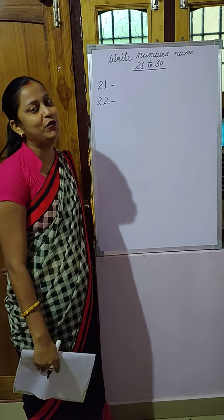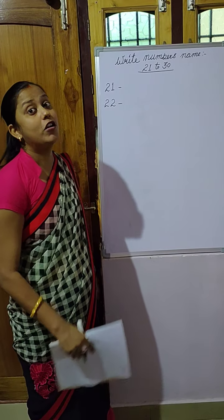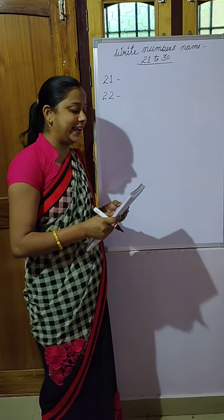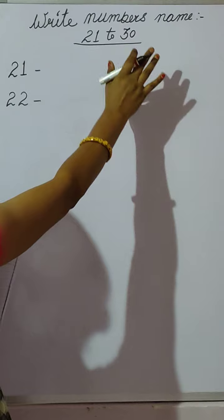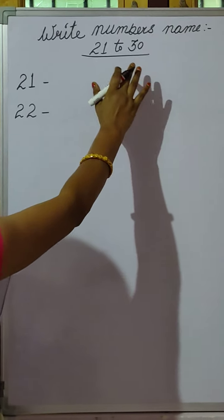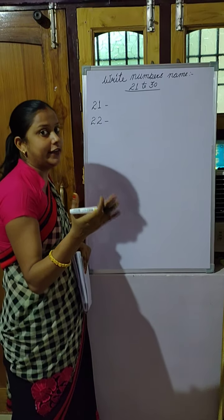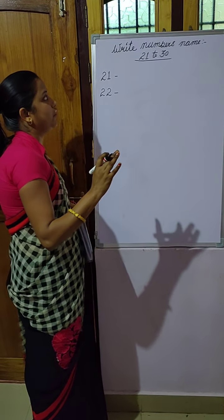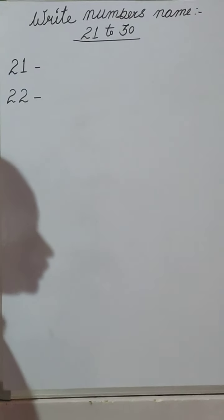Hello children, how are you all? I hope all are doing well and I hope all are doing their homeworks on time. Isn't it? Okay. So children, I will teach you maths numbers name 21 to 30. Children, we have already learnt numbers name 1 to 20 earlier in our last class. So today, we are going to start with 21 to 30 numbers name. Okay children?